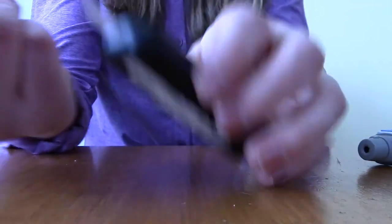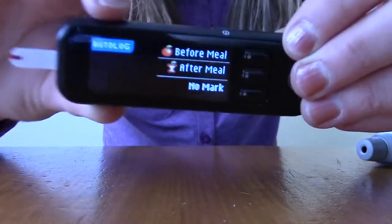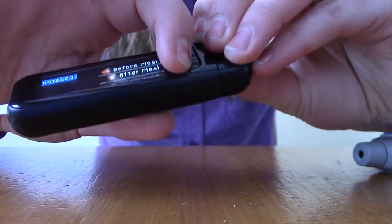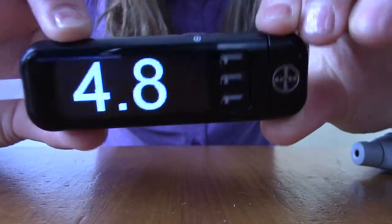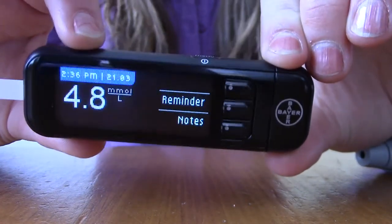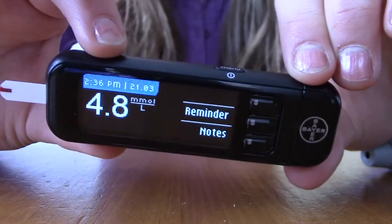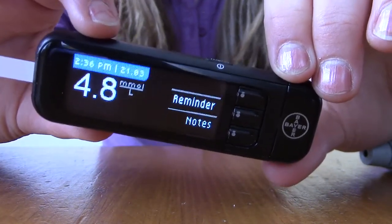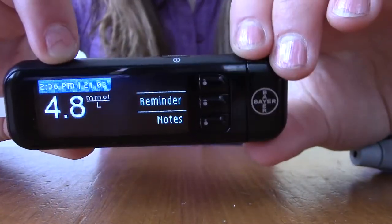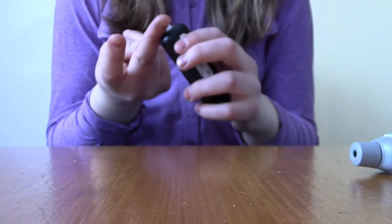Alright, now I'm gonna apply that blood onto my meter. Now I can choose from a couple of different selections. I'm just gonna choose 'no mark' because I'm not about to eat and it's not after a meal. Oh my gosh, look at that! I'm at a perfect 4.8. That is a beautiful blood sugar level. This is millimoles per liter. Keep in mind this is not milligrams per deciliter like they measure in the States. This is actually a fantastic number, so I'm really happy with that.